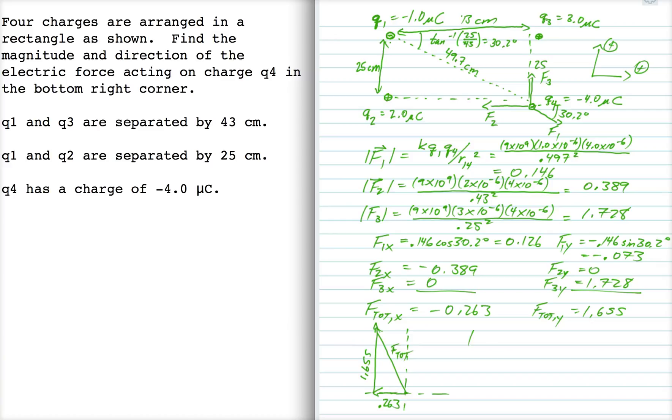So the magnitude of F total is the sum of the squares, right? That's the Pythagorean theorem. And that's 1.7 newtons.